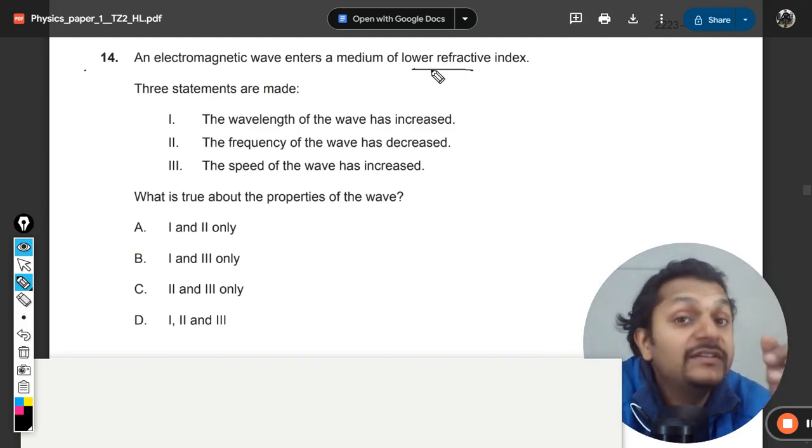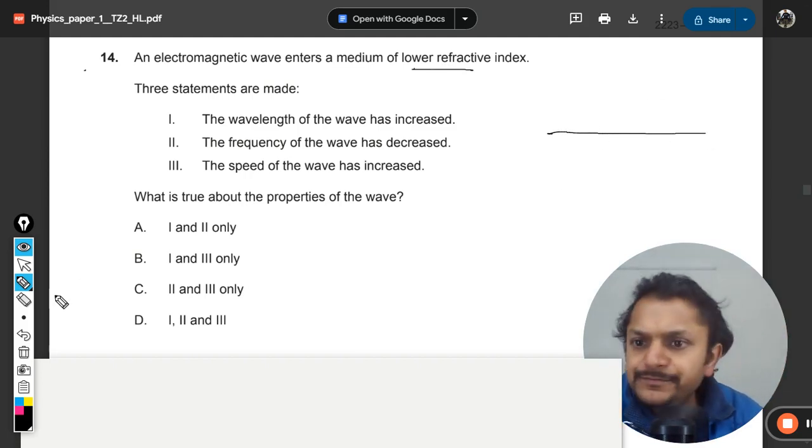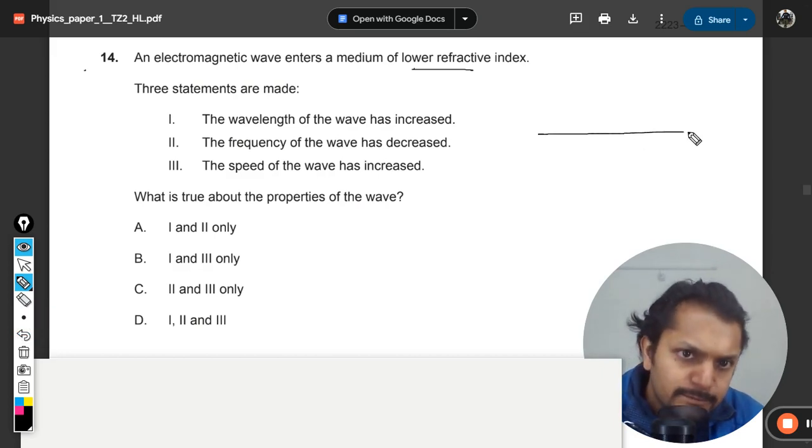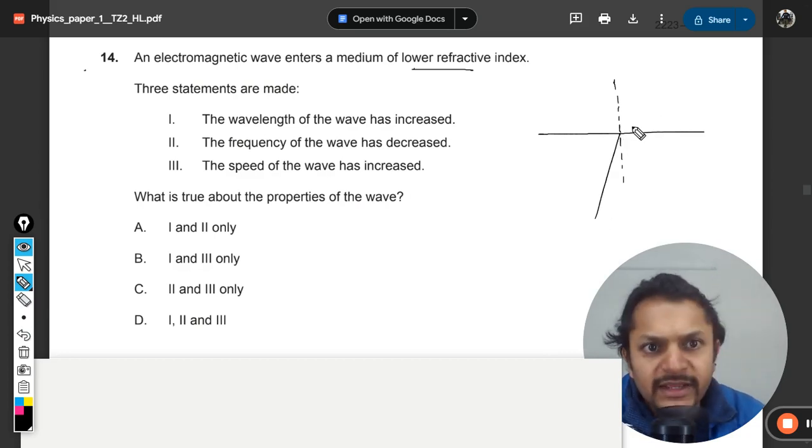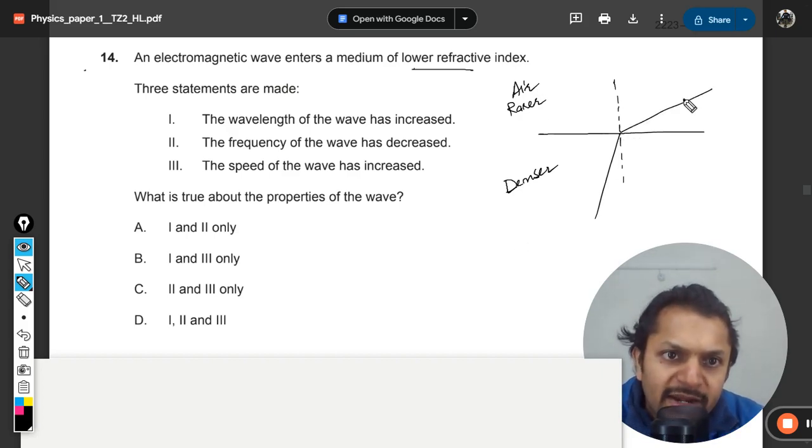So this is the interface, and this is the normal where the light is incident and it is coming like this. Obviously, if it is going into a rarer medium—rarer means the medium for which there is lower refractive index—and this will be denser, just like water, and this is, let us say, air. So it would be first of all bending like this, isn't it?